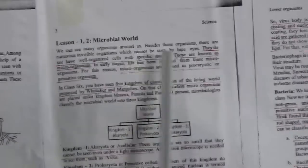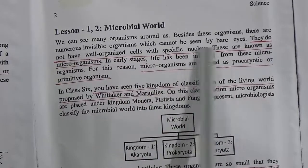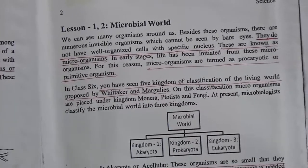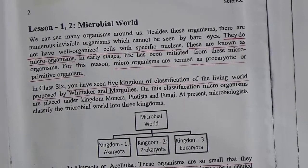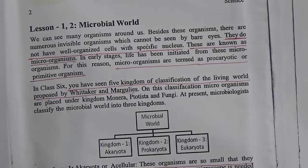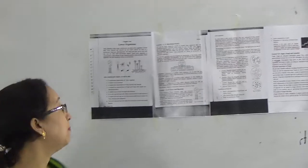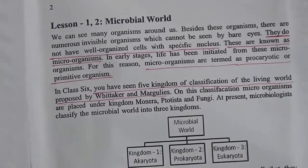Around us there are numerous invisible organisms which cannot be seen by bare eyes; we need a microscope. They do not have well-organized cells with a specific nucleus. These are known as microorganisms. In a cell there are mitochondria, nucleus, vacuole body, endoplasmic reticulum, cell membrane, and cytoplasm, but in the case of microorganisms, their cell is not well organized and they do not have a specific nucleus — that is why they are called microorganisms.